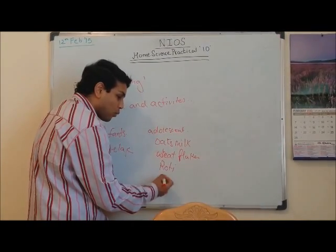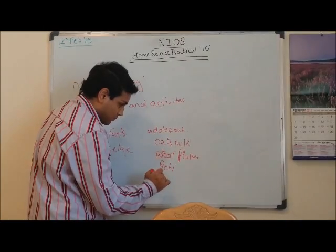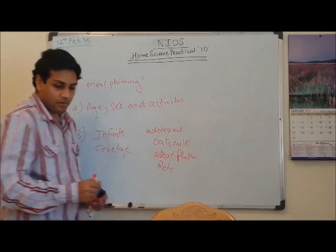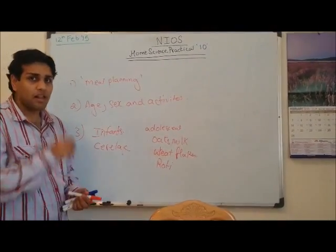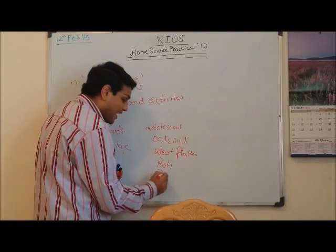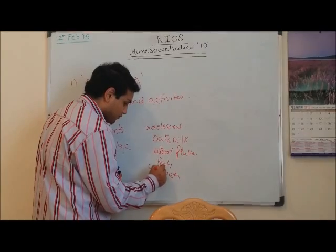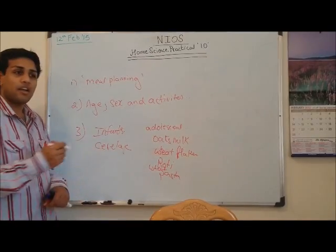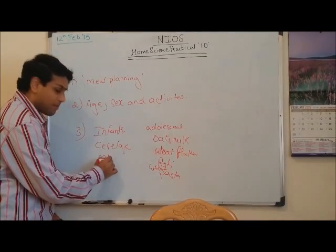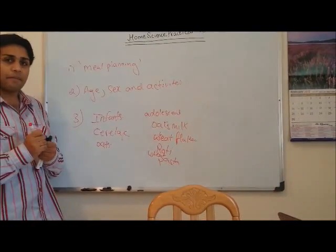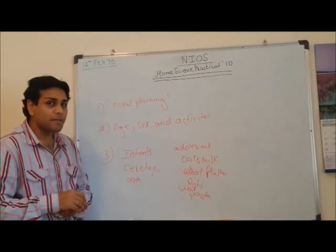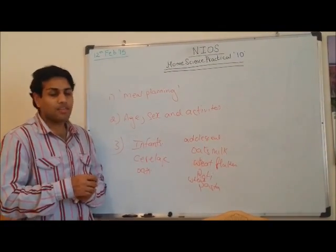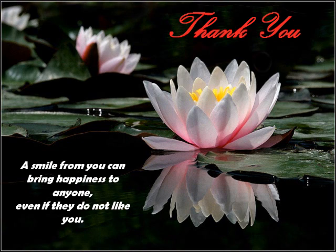You can also provide adolescents with wheat flakes, oats, roti, wheat pasta, or any other food commonly available that is made up of wheat. For babies, you can also add crushed oats, as it contains fiber and is made up of wheat. These are the possible questions that you will be asked. If you have any questions, please let me know in the comment box below. Thanks for watching the video.